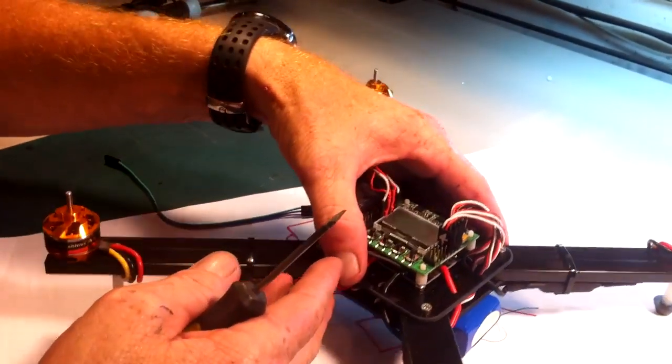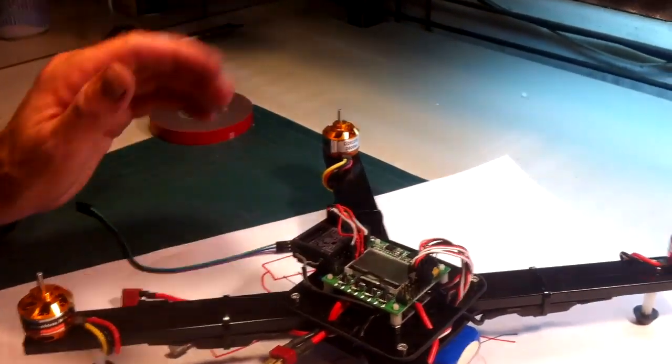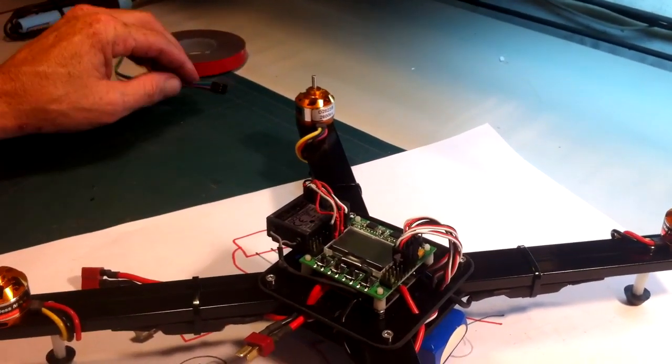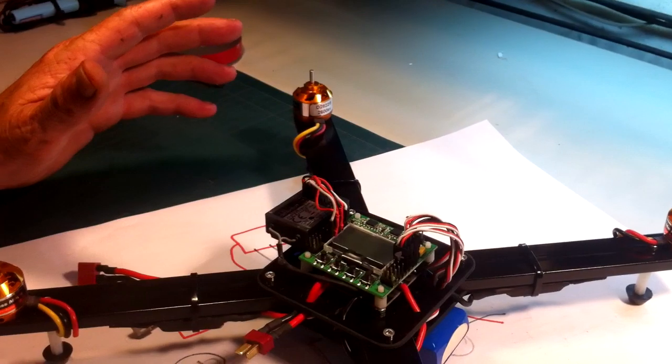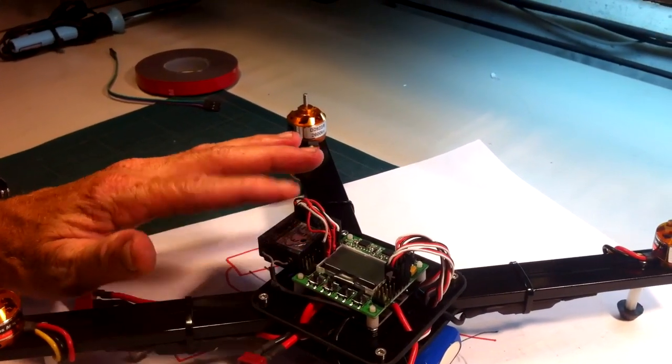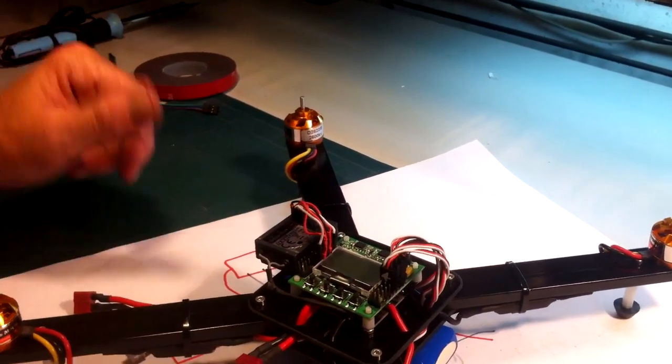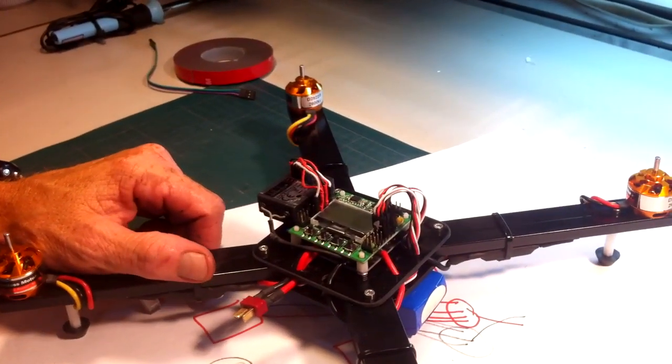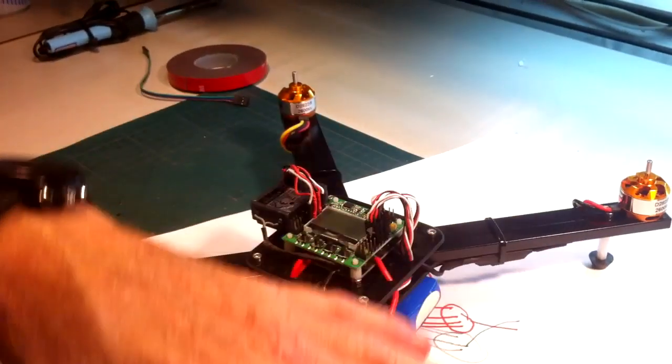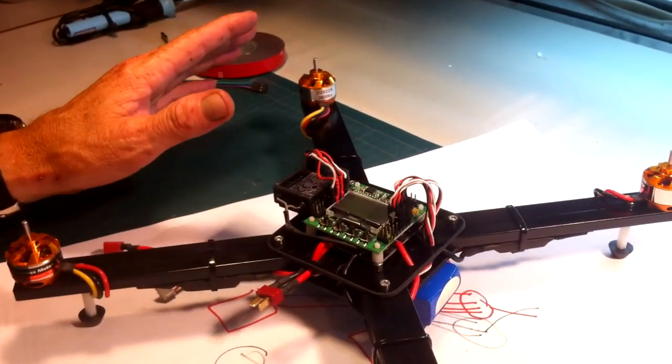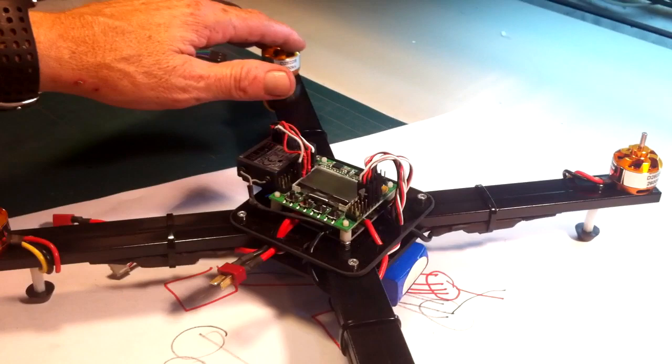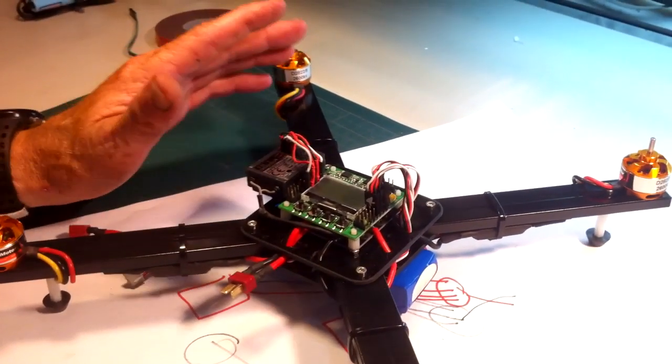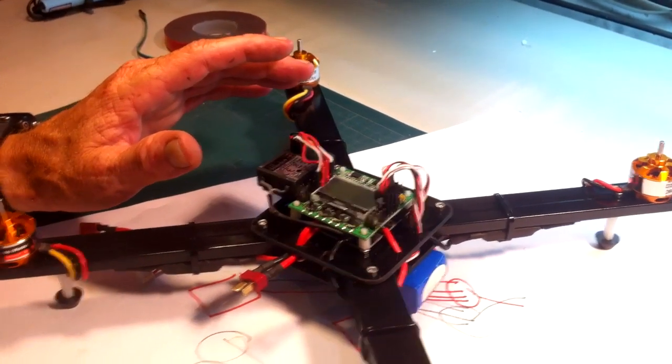Now there's a couple different more things we need to do before we can just put propellers on there and go flying. We want to bind the radio with the receiver on the board, spin the motors and see which way the motors are spinning. If the motors are spinning in the right direction we're good, but you're rarely going to be lucky enough to have all four motors spinning in the right direction. So I'm going to show you how to change the directions on the motors, which is very easy.